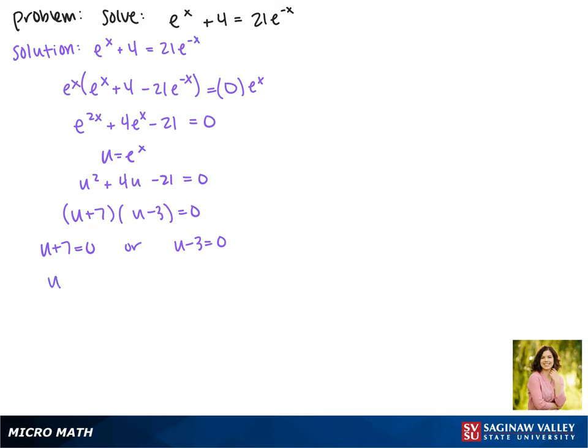Solving for u gives us u equals negative 7. Plugging x back in gives us e to the x equals negative 7. To solve for x, we have to take the natural log of both sides, so this gives us x equals the natural log of negative 7. But we can't take the natural log of a negative number, so this solution is extraneous.